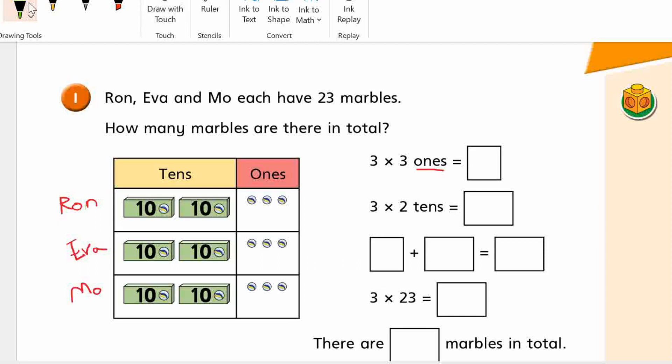Well, I've separated them out, so Ron, Eva, Mo, that's each of their marbles. 3 times 3, or 3 times 3 ones, equals what? Any idea? What's 3 times 3? 9.